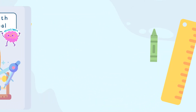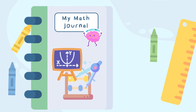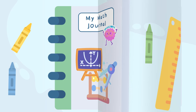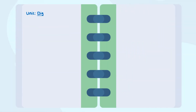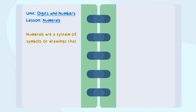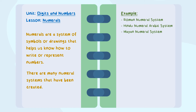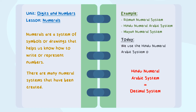Those were just some of the numeral systems that have been created over time. Now take out your math journal so we can summarize what we learned today. Today's math unit is Digits and Numbers; today's lesson: what are numerals? Numerals are a system of symbols or drawings that help us know how to write or represent numbers. There have been many numeral systems created over time, including the Roman system, the Hindu-Arabic system, and the Mayan system. The Hindu-Arabic system is used widely today and is generally referred to as the decimal system.